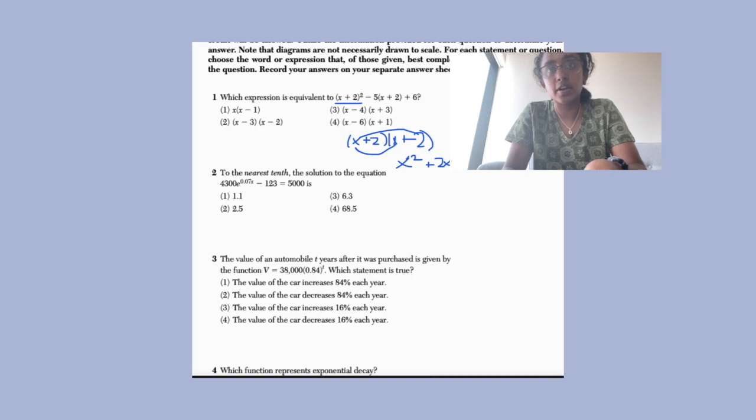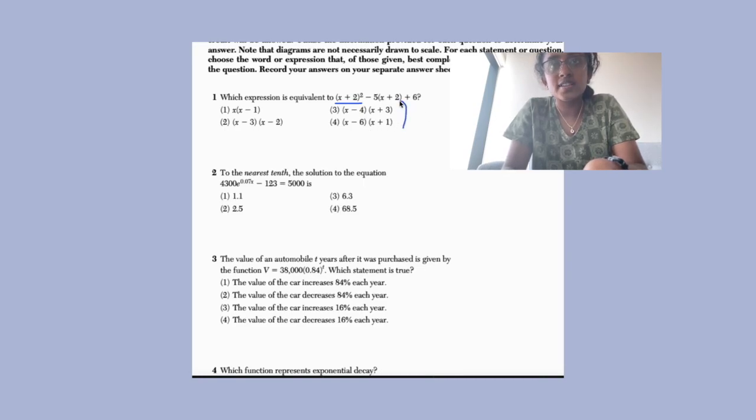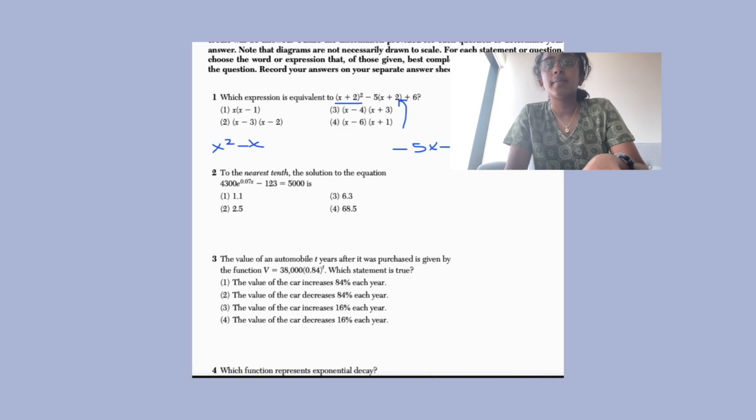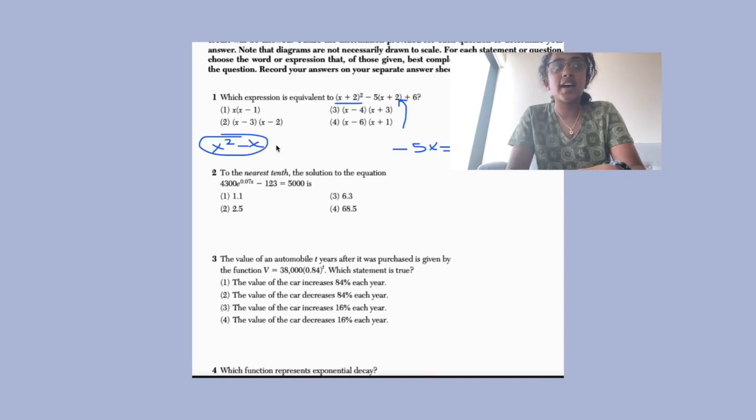So then this becomes x² + 4x + 4. Okay, now we can get rid of that. So we have x² + 4x + 4. And then what is this? We have to use the distributive property on this to get -5x - 10. And then we do plus 6. Now we just add everything up. So then we have x² + 4x - 5x is -x. And then we have +4 - 10 is -6. So we just have x² - x. And the equivalent of that would be x times (x - 1). So that is our answer.